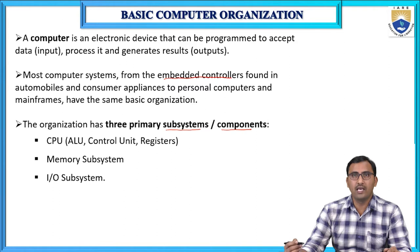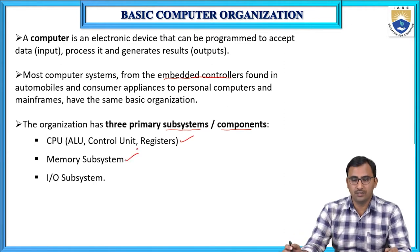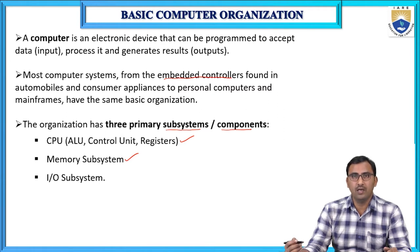The CPU contains these three internal parts: ALU, control unit, and internal registers. The CPU performs many operations and controls the entire computer. The microprocessor can be considered as the computer's CPU, because the microprocessor is the heart of the computer. Without a microprocessor, we cannot perform any operation in the computer, so it plays a very key role.